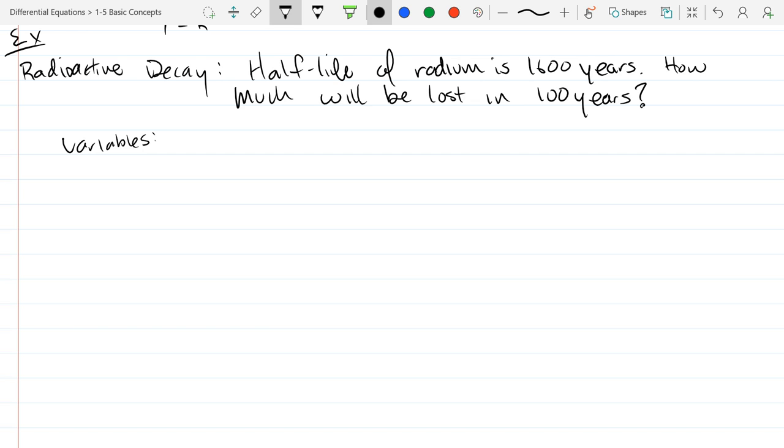This is going to feel a lot like the word problems in Calc 1 related rates or optimization where you're saying these are the variables, what they mean. So t is time in years. And x equals amount of radium.